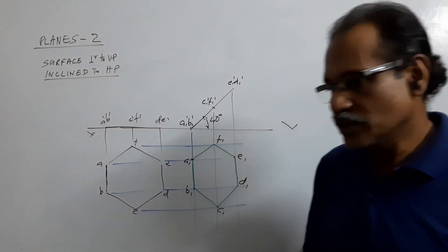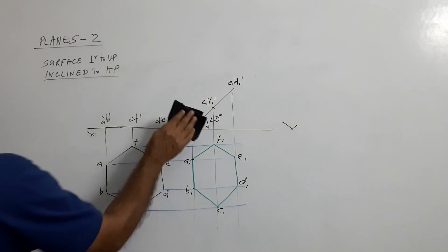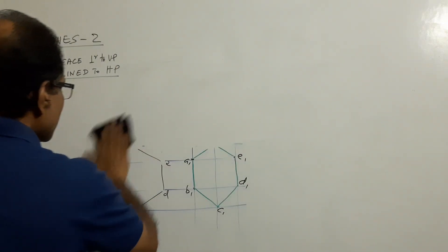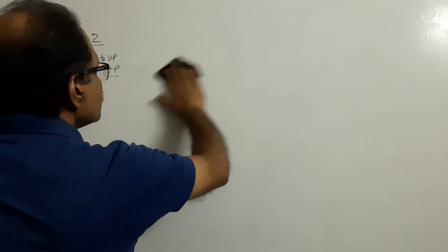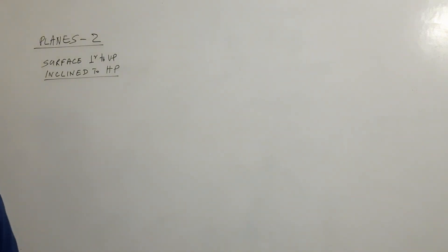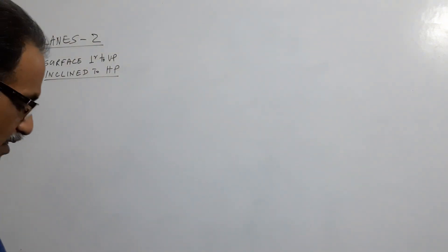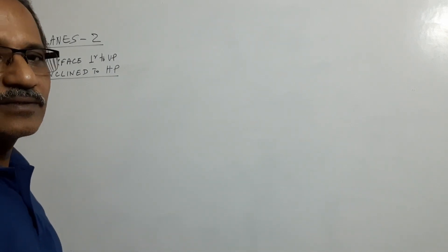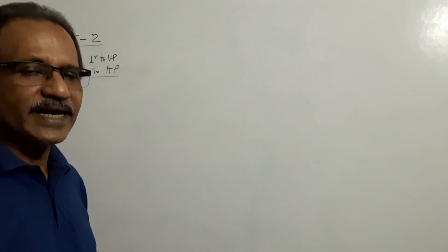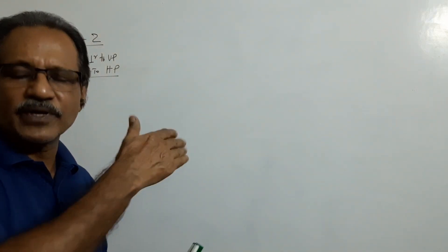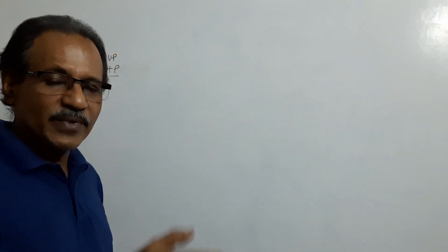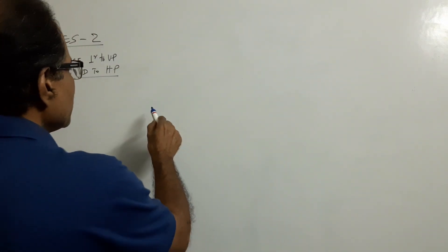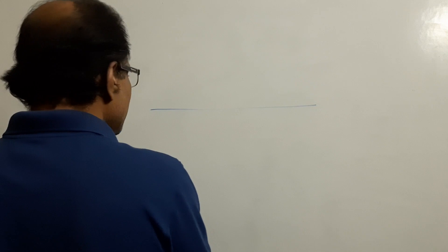Now we will draw another question. In this problem, we will consider an equilateral triangle resting on HP on a side, with the surface perpendicular to VP and making 50 degrees to HP. Same thing, same way — only the shape is different.